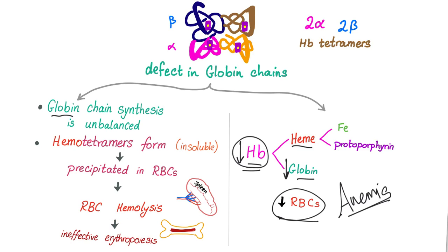The spleen will recognize these abnormal RBCs with the abnormal precipitate and will start destroying the RBCs, leading to RBC hemolysis. The bone marrow will try to respond by producing more RBCs. Unfortunately, I cannot synthesize globin, so I cannot synthesize hemoglobin. I'm not able to do my job. Ineffective erythropoiesis. Poor bone marrow.